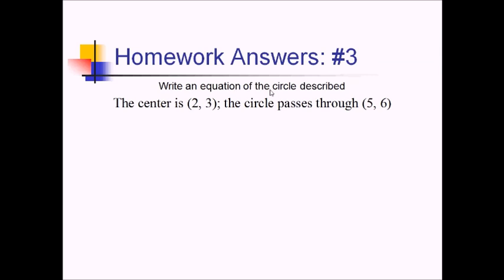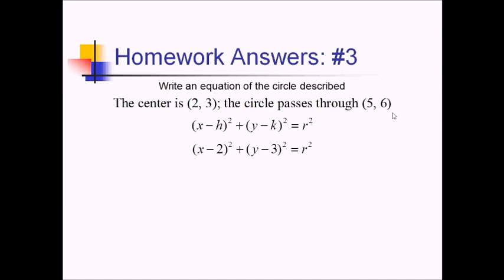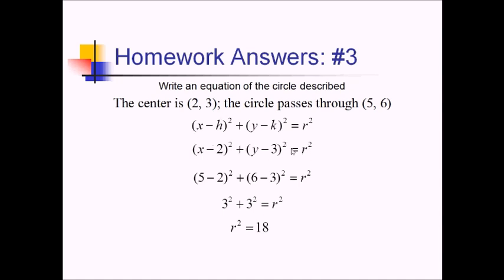Number three, we're trying to write the equation of a circle whose center is (2, 3) and which passes through (5, 6). Starting with our circle center-radius formula, we plug in 2 and 3 for h and k. We don't know the radius, but plugging in the point (5, 6) for x and y: (5 − 2)² + (6 − 3)² = r², giving us 3² + 3² = 18. So the equation is (x − 2)² + (y − 3)² = 18.